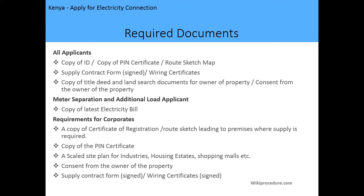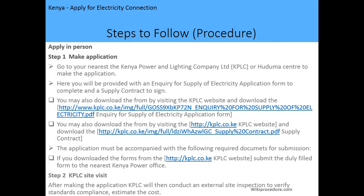For corporate applicants, you need a copy of the certificate of registration, a route map to the premises where electricity supply is required, a copy of the PIN registration certificate, a scaled site plan for industries, housing estates, or shopping malls, the consent from the owner of the property, and a supply contract form and wiring certificates, both of which must be signed.